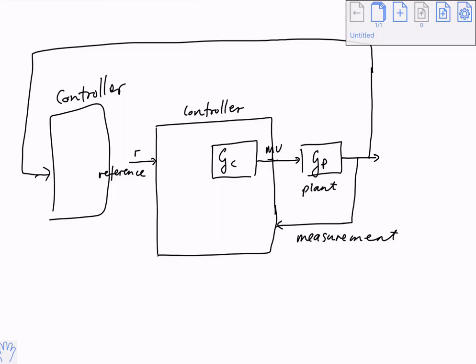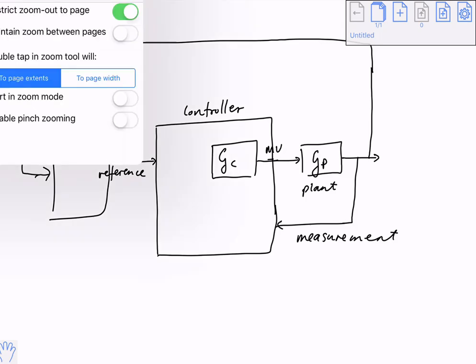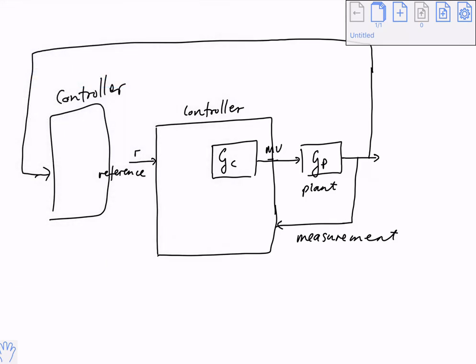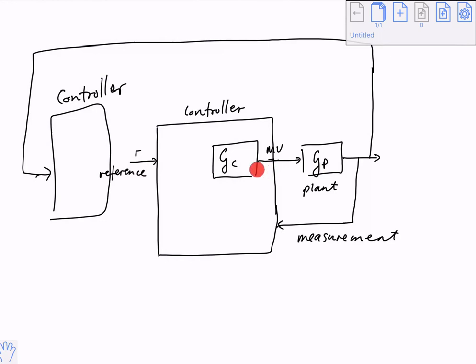Feed forward and feedback control. The diagram on the screen right now is known as a feedback control loop. It's called a feedback control loop because of this connection where the controller moves things — makes manipulations on these manipulated variables on the plant.